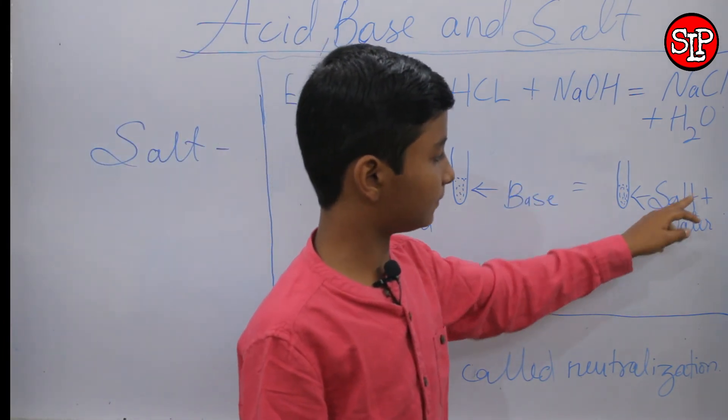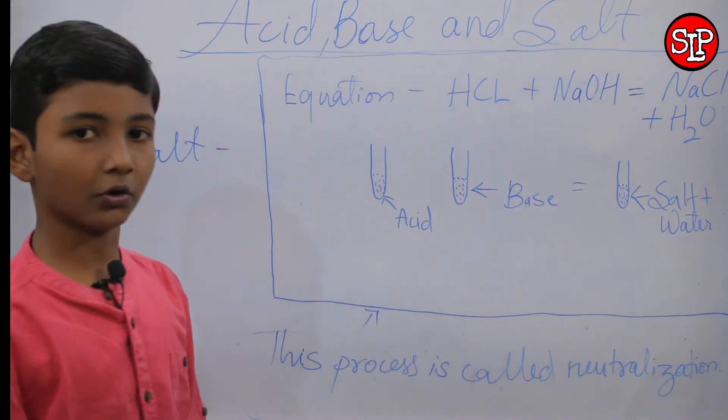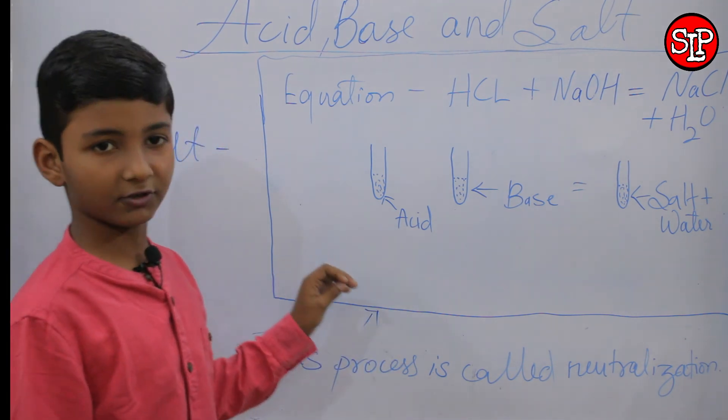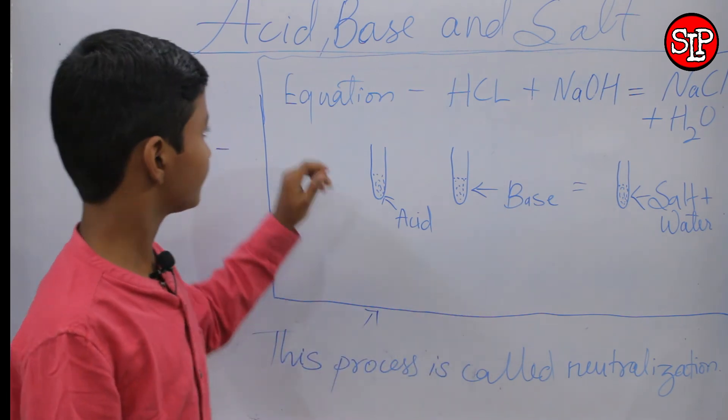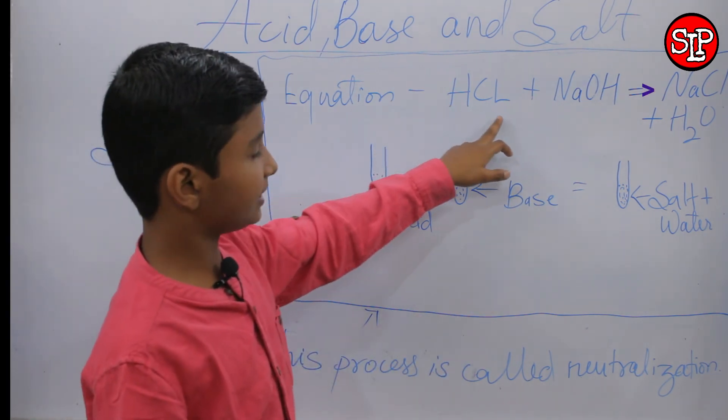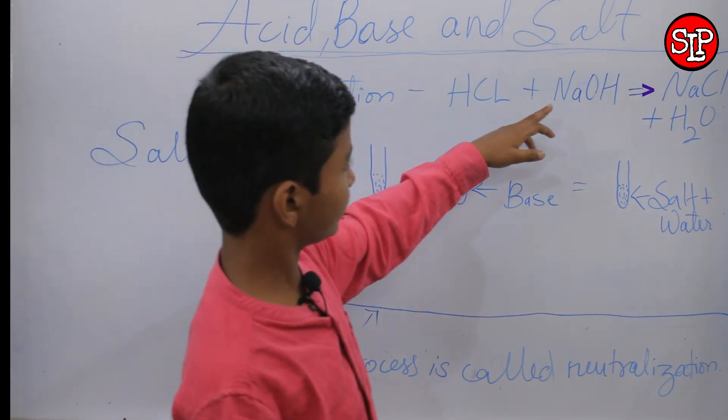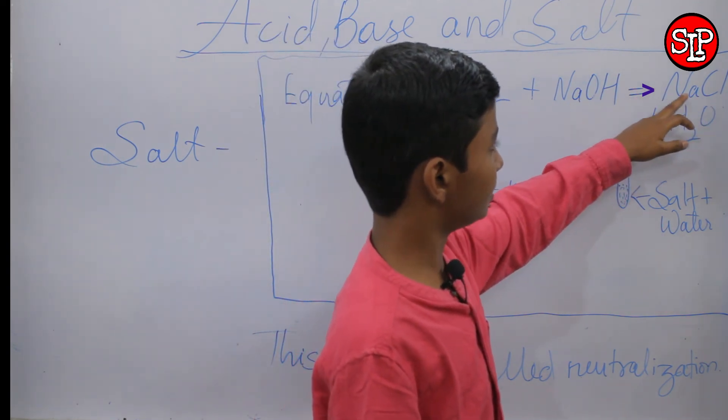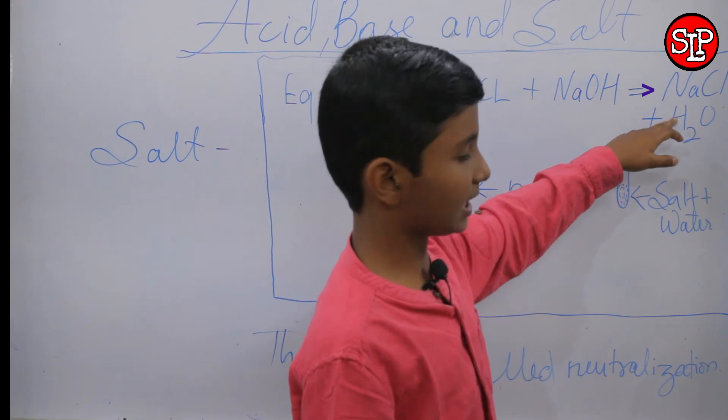So we can evaporate the salt plus water and after that we will get the salt. Equation: HCl, hydrochloric acid, plus sodium hydroxide, NaOH, is equal to NaCl, sodium chloride, plus H2O water.